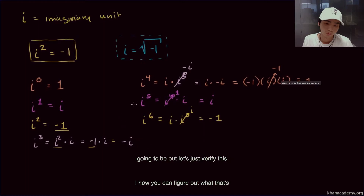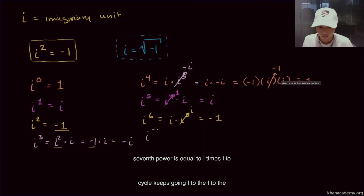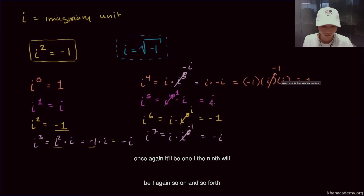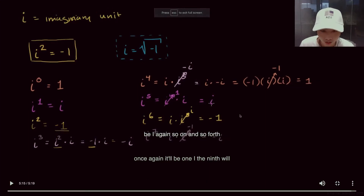Let's verify this cycle keeps going. i to the seventh power equals i times i to the sixth. i to the sixth is negative 1, so i times negative 1 is negative i. If you take i to the eighth, it will be 1 again. i to the ninth will be i again, and so on and so forth.